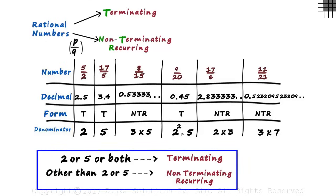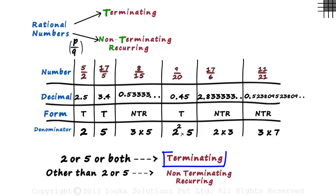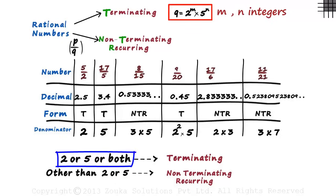Let's generalize these two rules. If the number is in the form P by Q, then all we need to do is reduce Q to its prime factors. For terminating decimals, Q will be of the form 2 raised to M multiplied by 5 raised to N, where M and N are integers. It simply means that the prime factors will be either 2 or 5 or both.